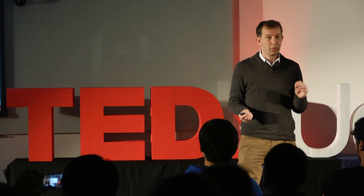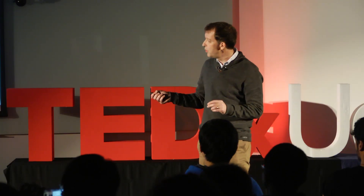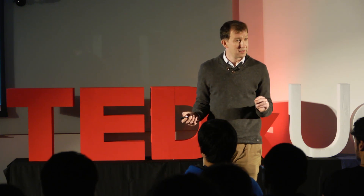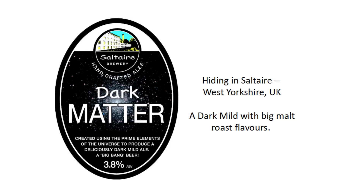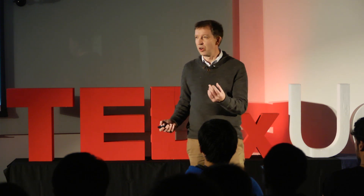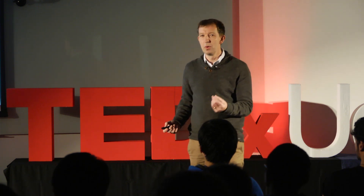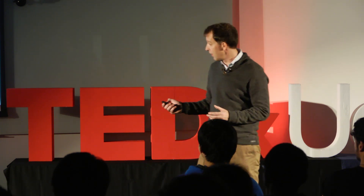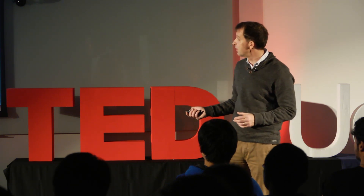I'm from Yorkshire. And in Yorkshire, we know lots of things. We do know what dark matter is, and I now know why we've not been able to find it. Dark matter, you see, is created using the prime elements of the universe — but it's a dark mild with big malt roast flavours. We've been using the wrong detectors. We should be tasting the universe to see what dark matter is.